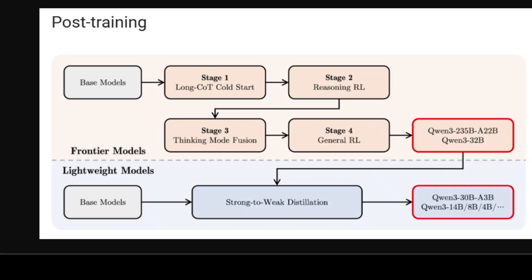Now for the pre-training details. The dataset for Qwen3 has been significantly expanded compared to Qwen2.5. While Qwen2.5 was pre-trained on 18 trillion tokens, Qwen3 uses nearly twice that — approximately 36 trillion tokens covering 119 languages and dialects. To build this dataset they collected data from the web and PDF-like documents, using Qwen2.5-VL to extract text. They used Qwen2.5-Math and Qwen2.5-Coder to generate synthetic data including textbooks, Q&A pairs, and code snippets.